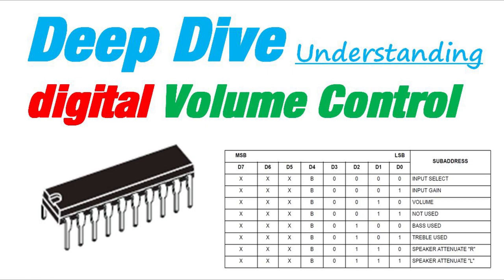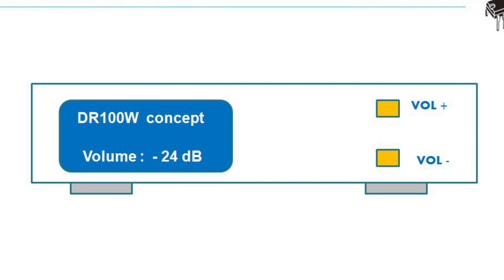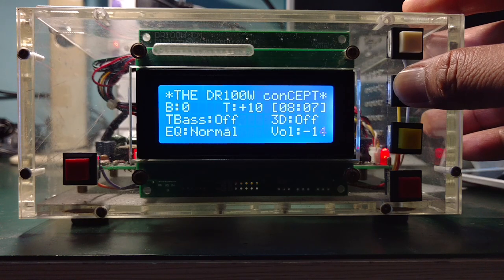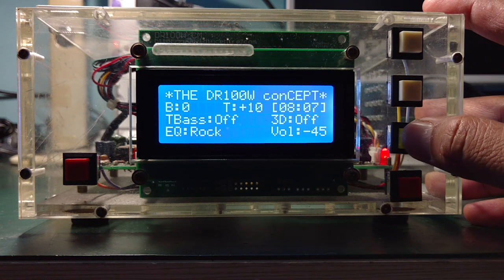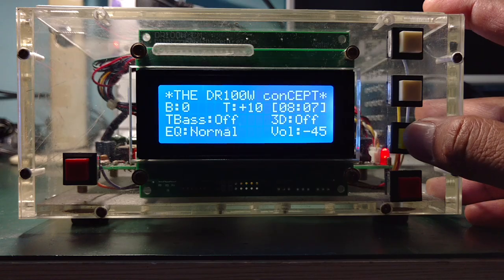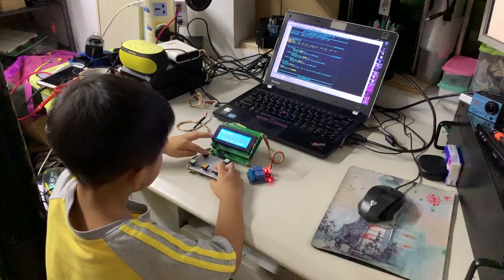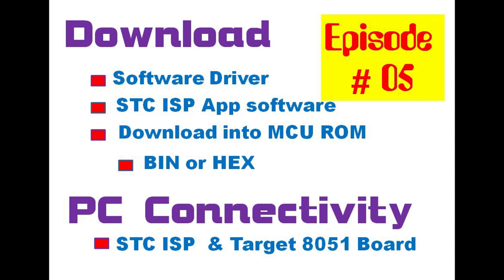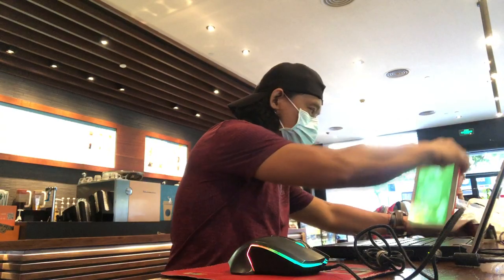This is the end of my presentation to access the TDA7449L, which will be used in our next episode as a digital volume control with up and down buttons — volume up and volume down. There is no more rotating potentiometer, but rather a push button. If you want to explore more on digital volume control, digital bass and treble, or even an equalizer, you may need to invest time to learn microcontroller programming.